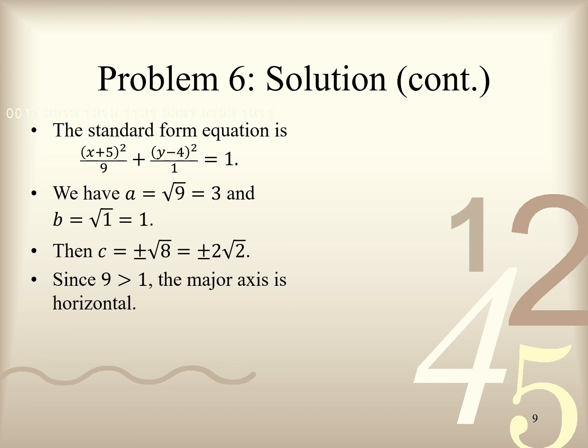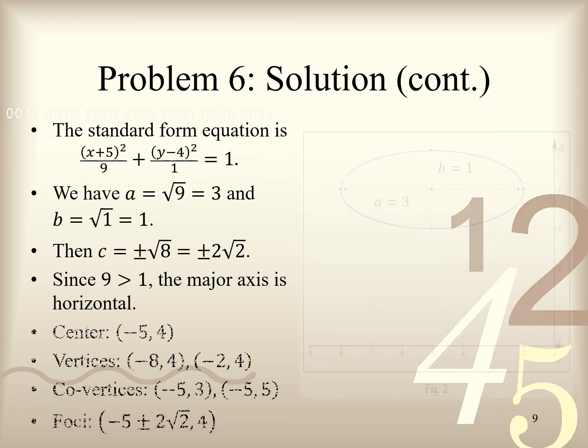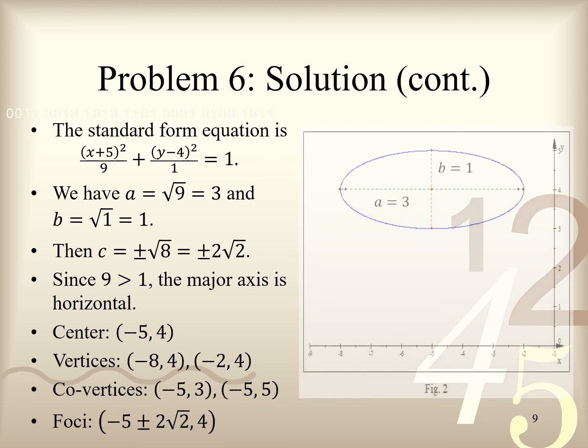Clearly, the center of this ellipse is the coordinate (-5, 4). Its vertices are given by the coordinates (-8, 4) and (-2, 4). Its co-vertices are (-5, 3) and (-5, 5). Finally, its foci are given by (-5 ± 2√2, 4). With all this information, we have the graph of this ellipse given in figure 2, as needed. Its center is in red, its vertices and co-vertices are in black, its foci are in purple, its major axis is in green, and its minor axis is in orange.